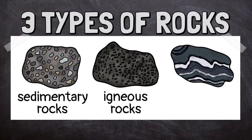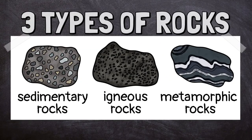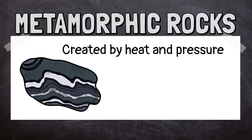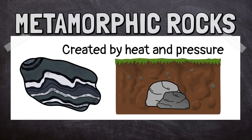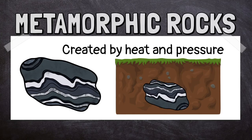The third type of rock is a metamorphic rock. These rocks are formed when other rocks become buried under earth's surface. The heat and pressure of the rock layers above cause the rocks to change. Metamorphic means change.